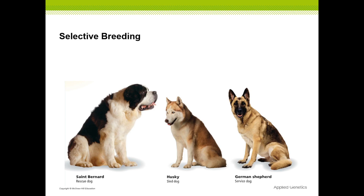Hi guys, this is Mr. Wheeler. This lesson is on applied genetics. As humans, what control do we have over the genetics of other species' populations? When we're talking about human influence on other species, this is called selective breeding — when we're trying to get desired traits of certain plants and animals and selecting them to pass on to future generations through controlled breeding.